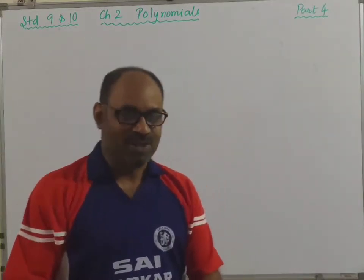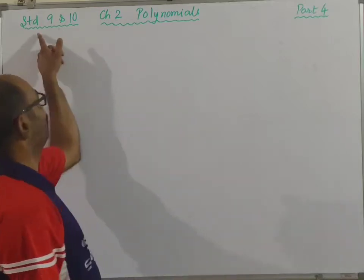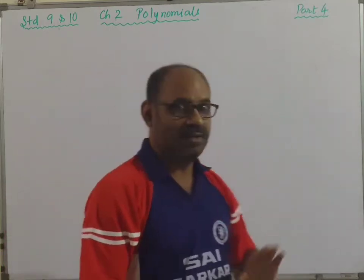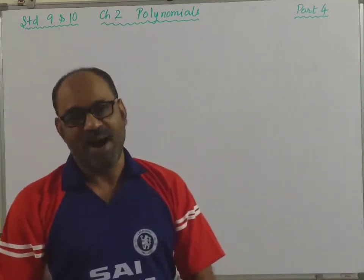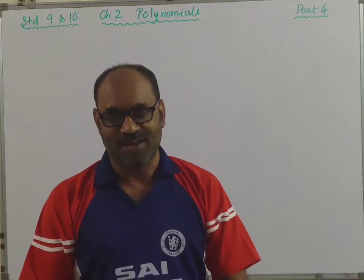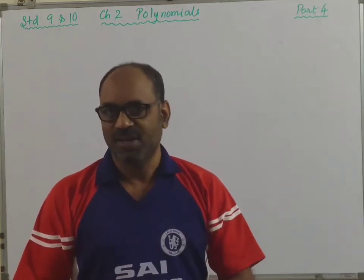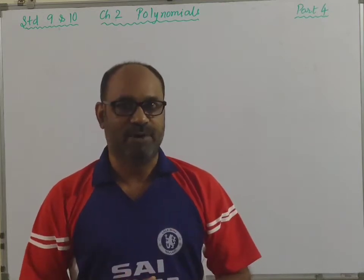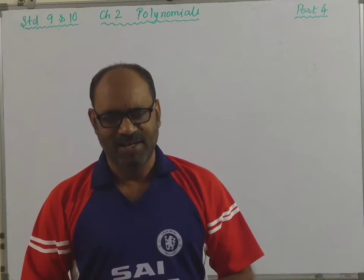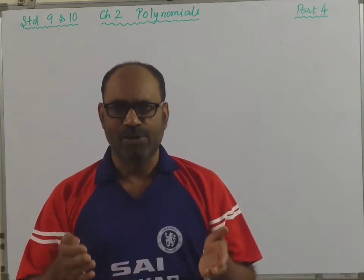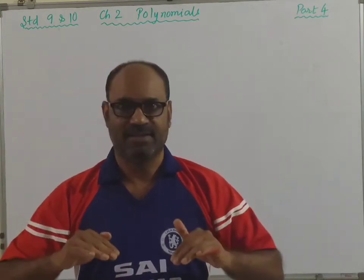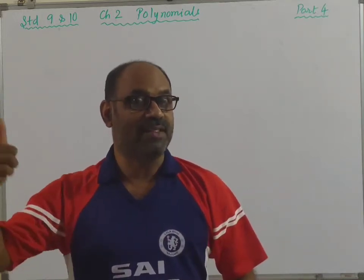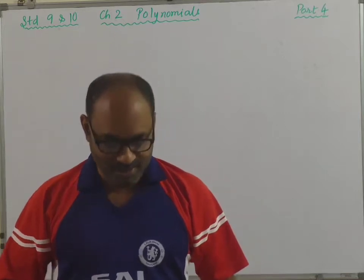Welcome back students to the new session. This is for both standard 9th and 10th, Chapter 2: Polynomials, Part 4. In the previous session we saw how to find zeros of a linear polynomial and quadratic polynomial. Now we are going to do exactly the reverse: given the zero of a polynomial, find that linear polynomial.